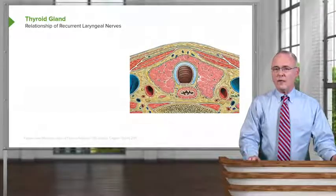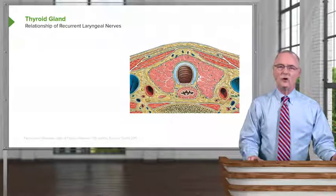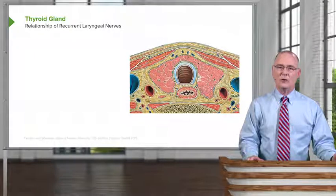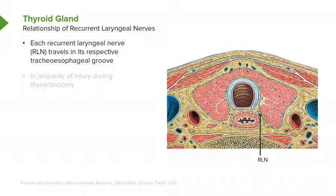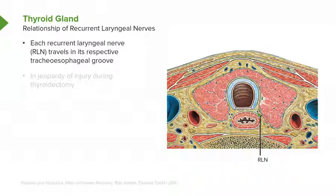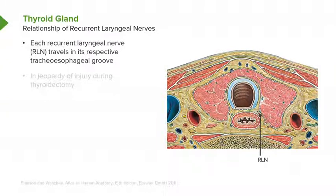This particular slide shows a very important clinical and anatomic relationship — the relationship of the thyroid gland to the recurrent laryngeal nerves. Each laryngeal nerve — here is the right recurrent laryngeal nerve — is lying within the tracheoesophageal groove. We see that groove between the trachea and the esophagus, which lies posteriorly. We also see the same relationship, though unlabeled, on the opposite side.